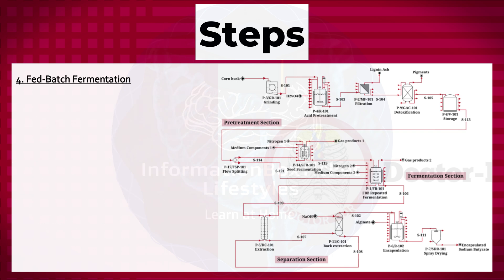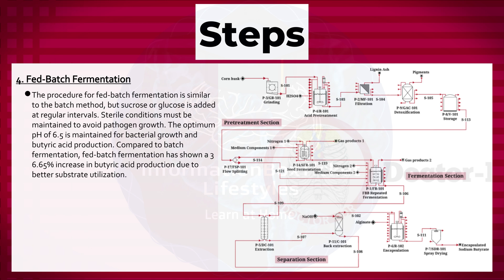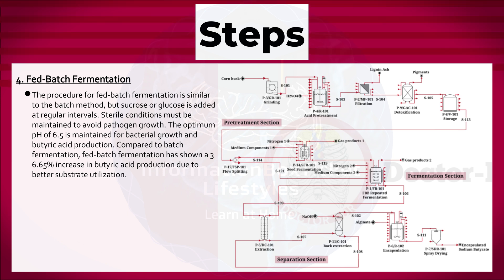Fed-batch fermentation: the procedure is similar to the batch method, but sucrose or glucose is added at regular intervals. Sterile conditions must be maintained to avoid pathogen growth. The optimum pH of 6.5 is maintained for bacterial growth and butyric acid production. Compared to batch fermentation, fed-batch fermentation has shown a 36.65% increase in butyric acid production due to better substrate utilization.